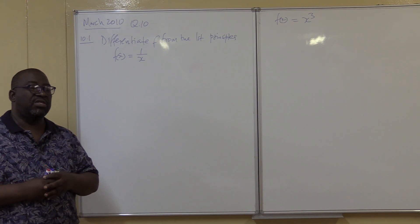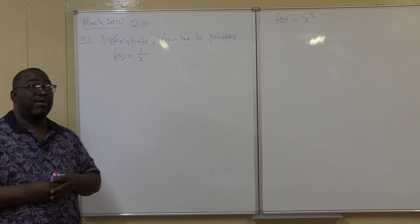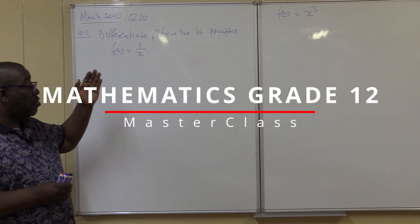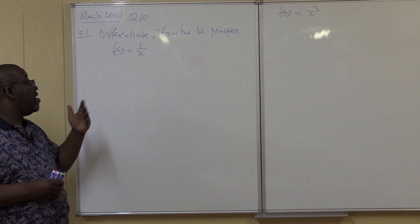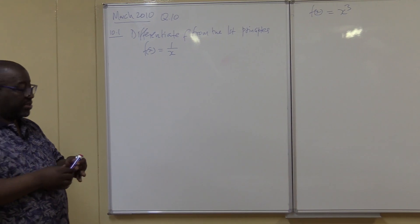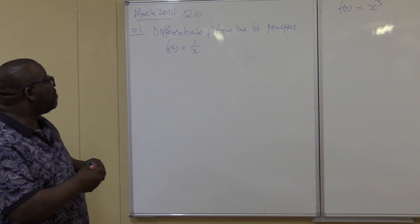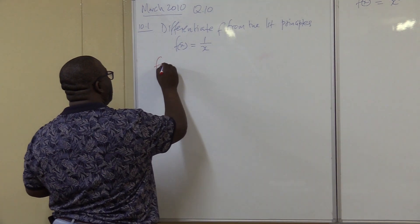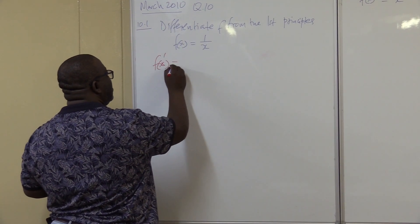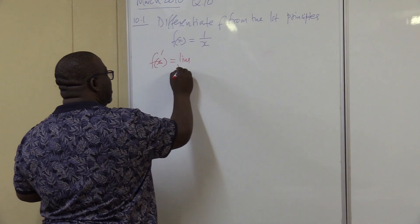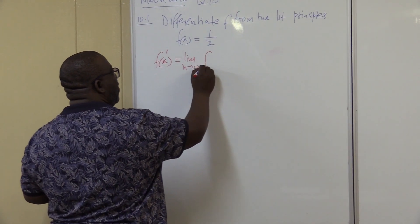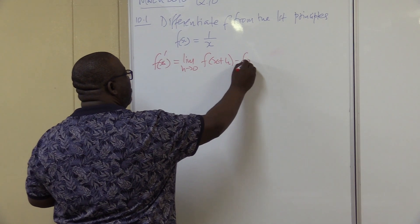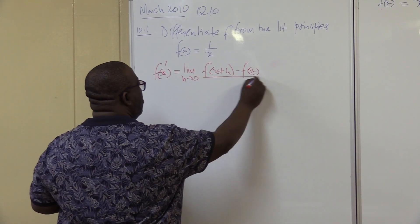Let's look at how we deal with a fraction. For example, f of x is equal to 1 over x. Find the derivative using first principles. The formula: f prime of x is equal to the limit as h approaches 0 of f of x plus h, minus f of x, all over h.